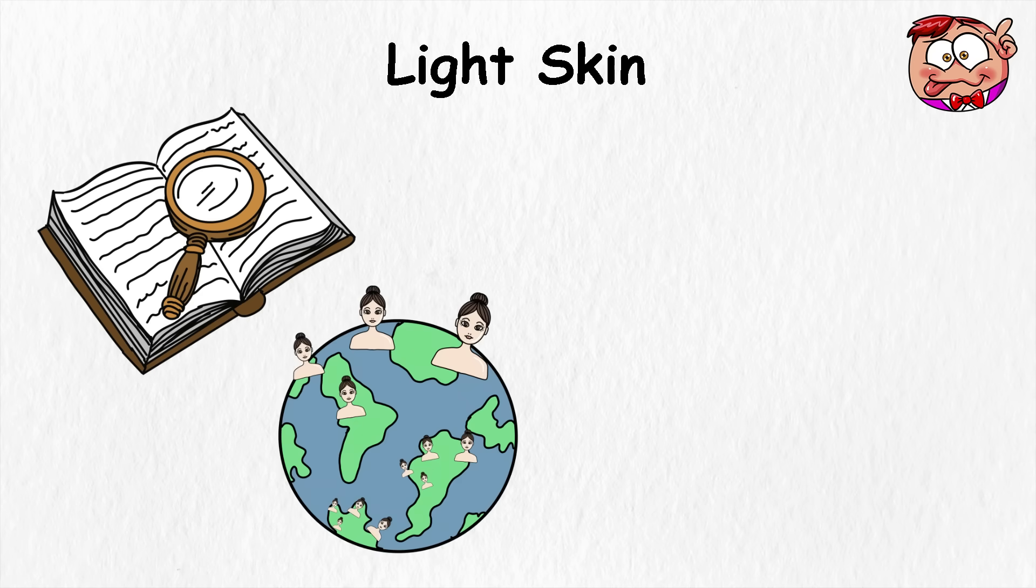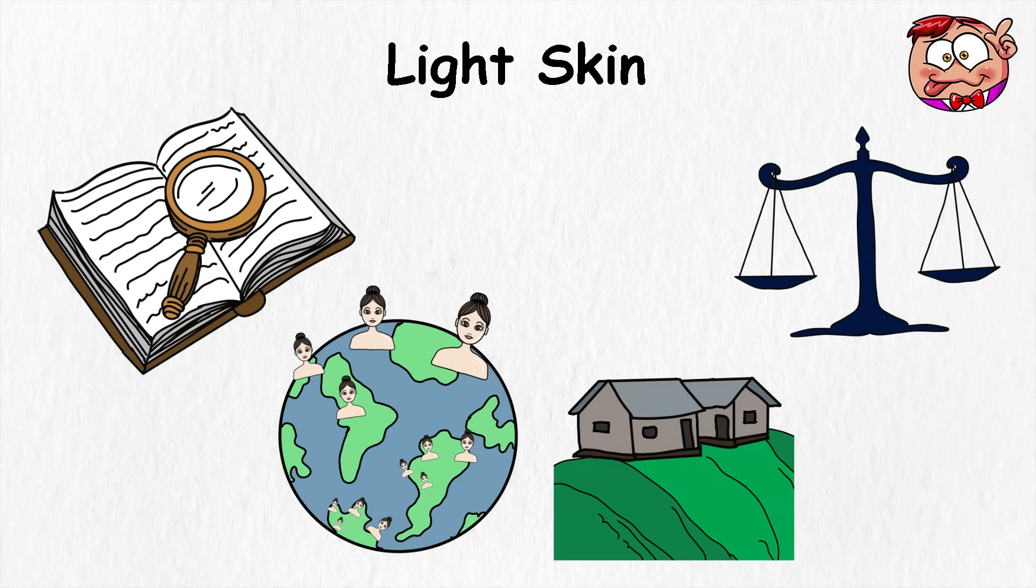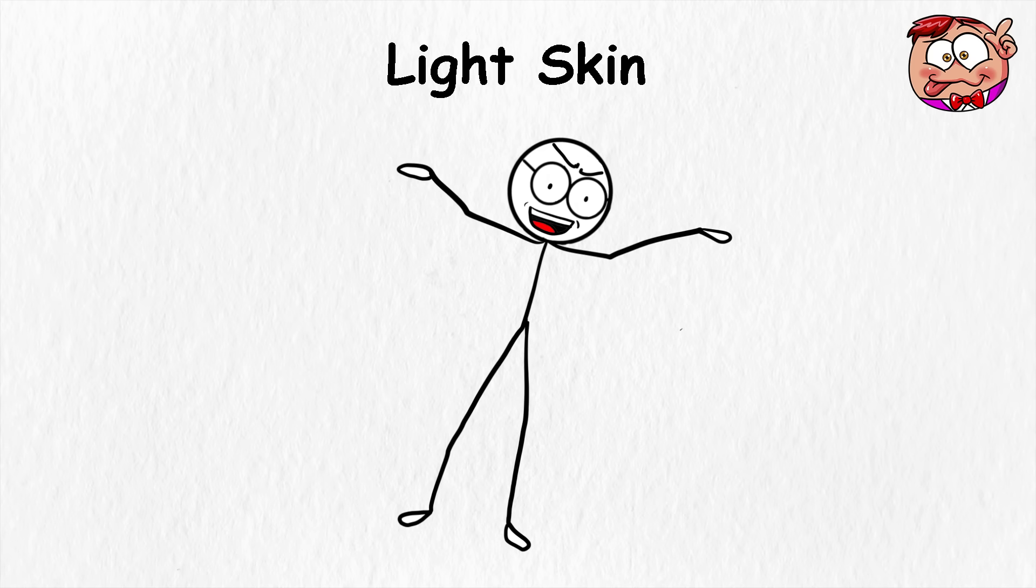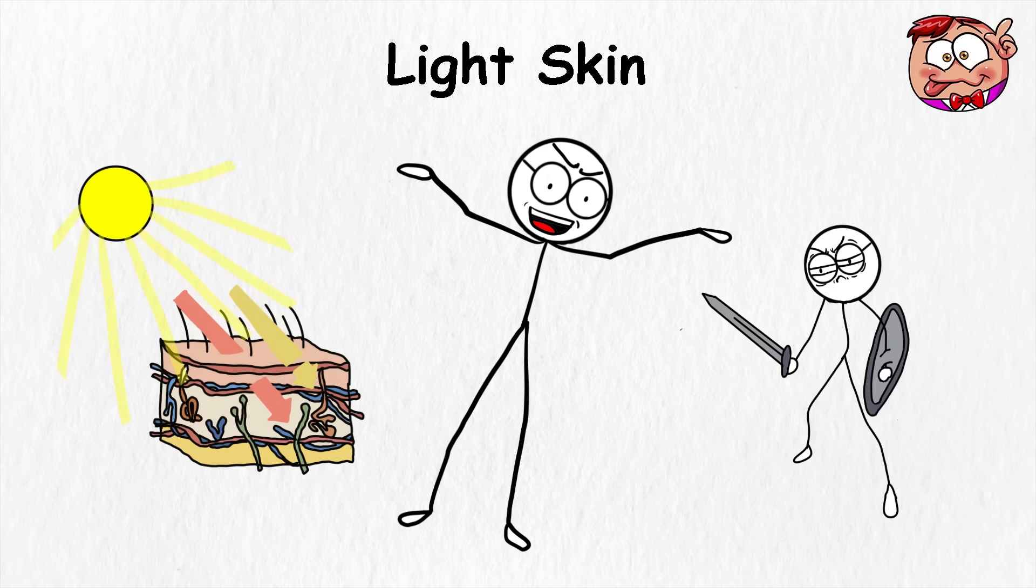Historically, light skin populations often balanced farming outdoors with life in villages or towns, meaning they needed both some protection and some vitamin D absorption.